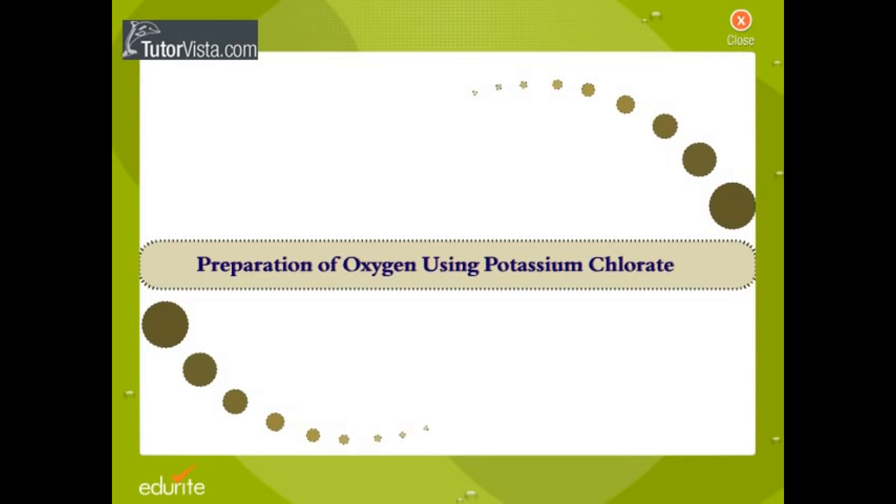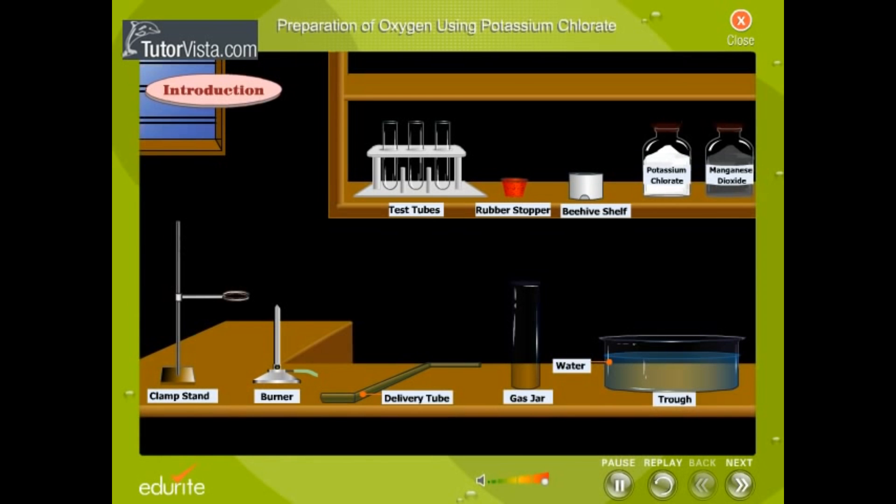Decomposition of Oxygen Using Potassium Chlorate. Oxygen gas can be prepared in the laboratory by the decomposition of potassium chlorate.